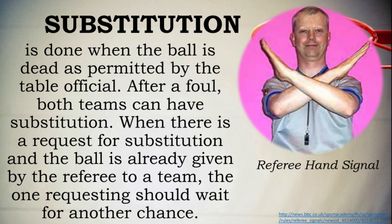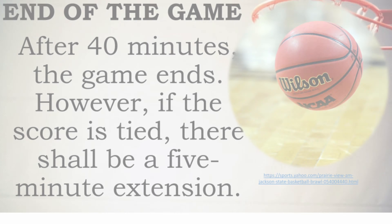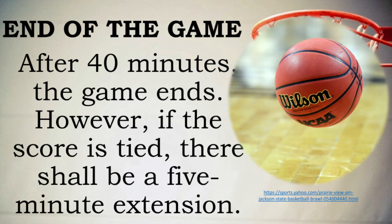Substitution is done when the ball is dead, as permitted by the table official. After a foul, both teams can have substitution. When there is a request for substitution and the ball is already given by the referee to a team, the one requesting should wait for another chance. End of the game: after 40 minutes, the game ends. However, if the score is tied, there shall be a 5-minute extension.